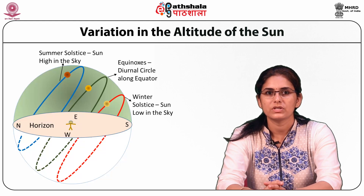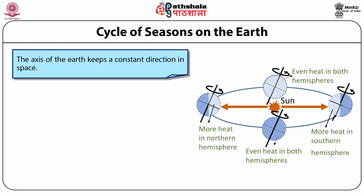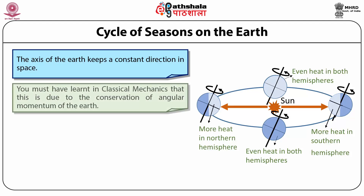In the southern hemisphere, the situation is exactly the opposite: the sun is high in the sky in December and low in the sky in June. A consequence of the fact that the earth rotates on its axis is the cycle of seasons. The rotation axis of earth makes an angle of 23.5 degrees with its orbit, and this axis remains constant in space due to the conservation of angular momentum of the earth. As a result of the tilt, for a part of the year the northern hemisphere receives more heat from the sun than the southern hemisphere.